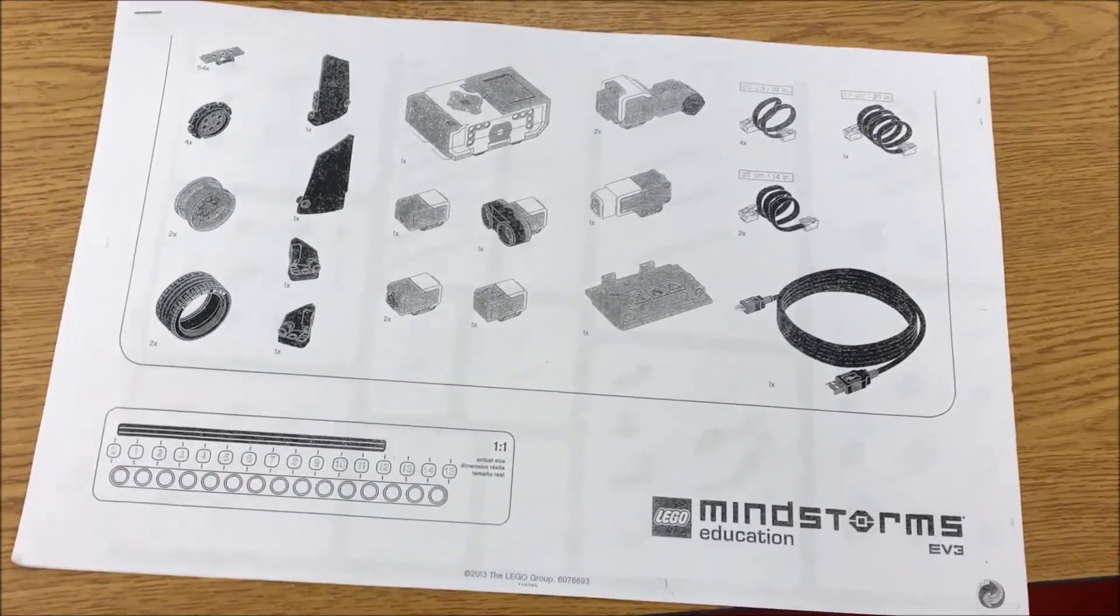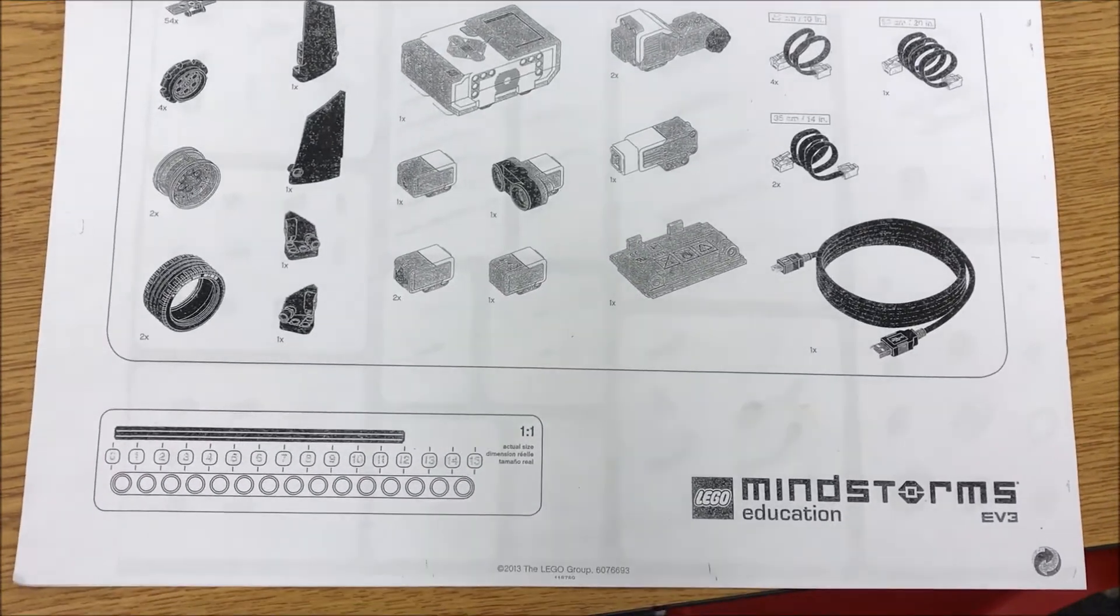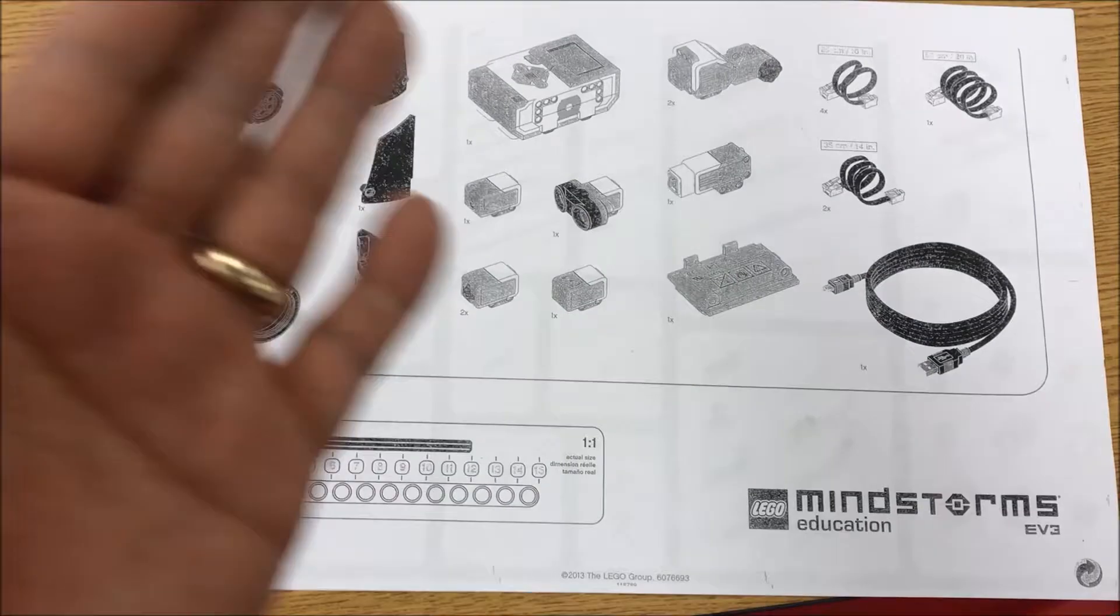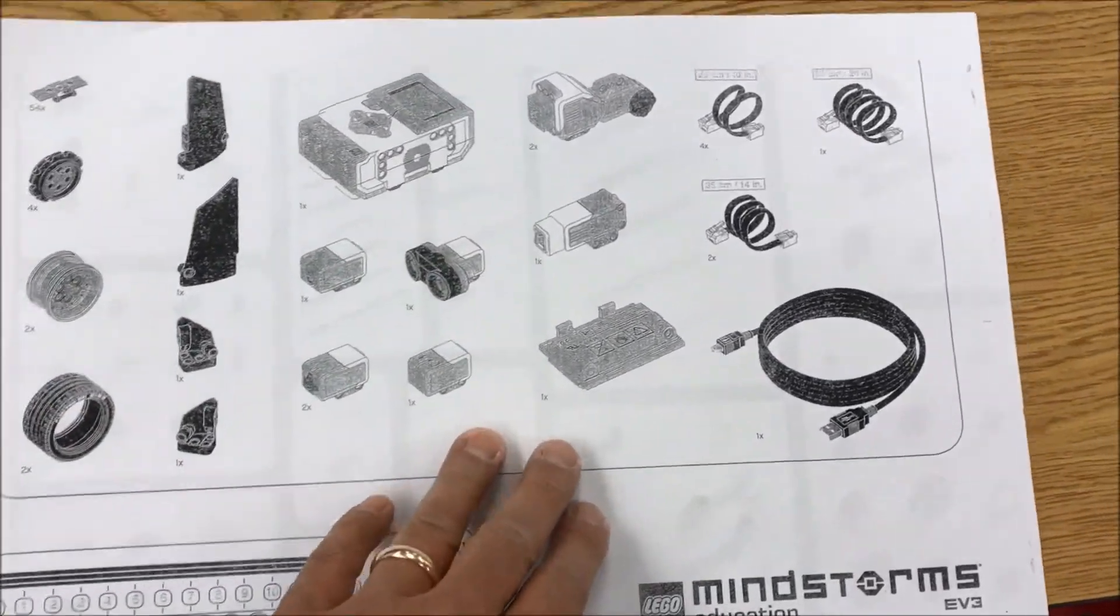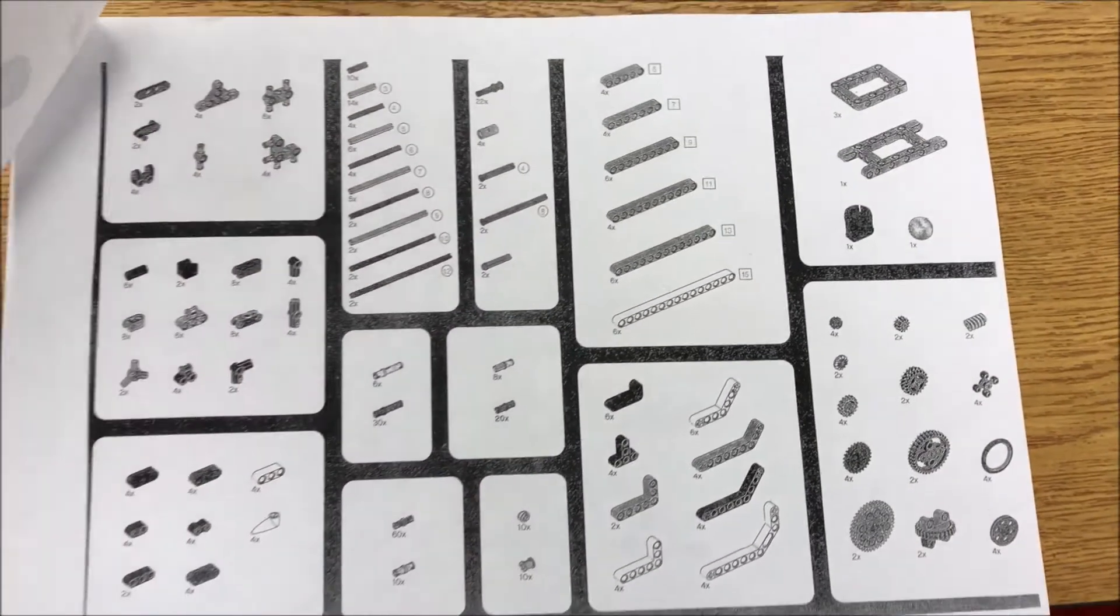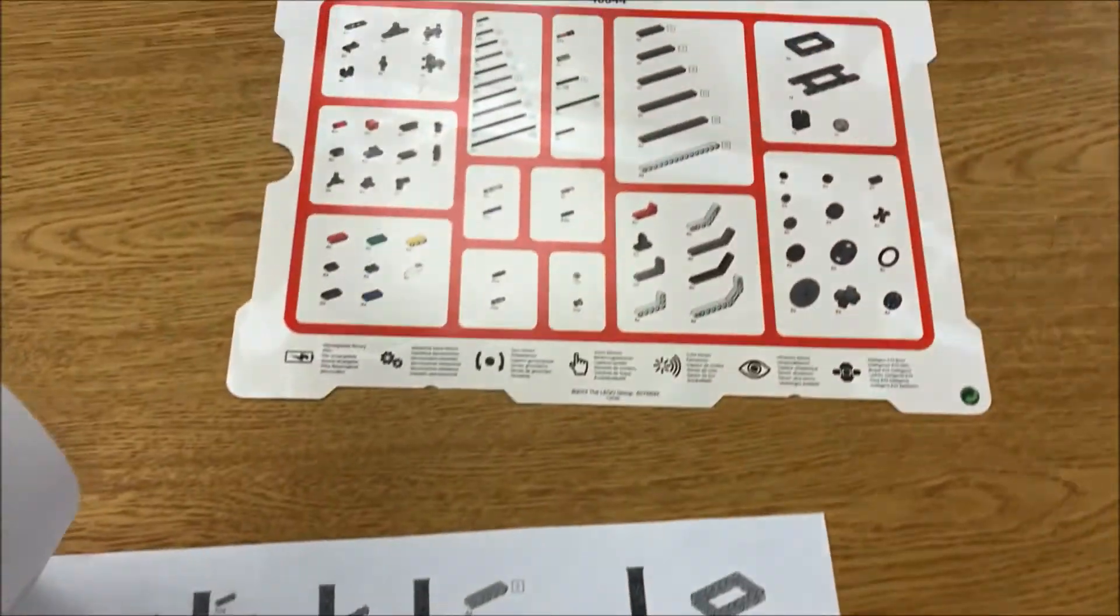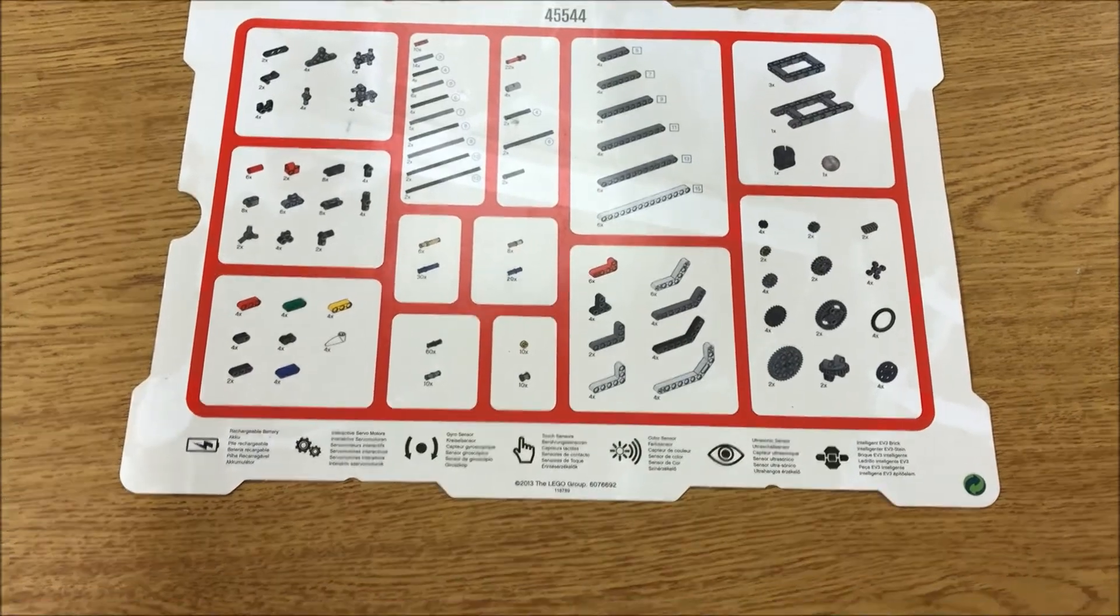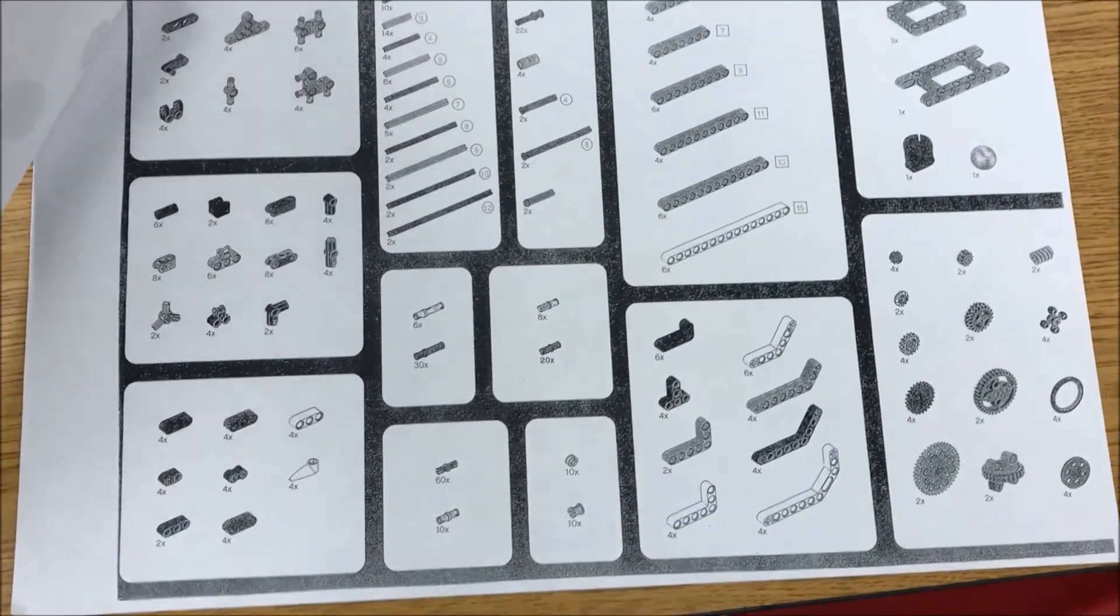What I do is basically photocopy and enlarge the LEGO Mindstorms piece map. Here are all the pieces that should be below the kit, and these are the pieces that should be in the tray. I basically just reproduce the piece map.